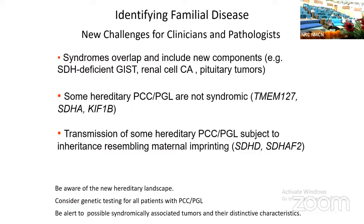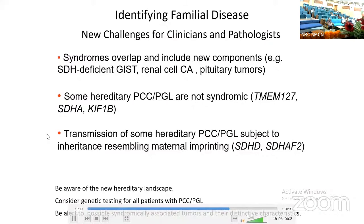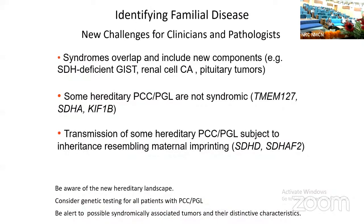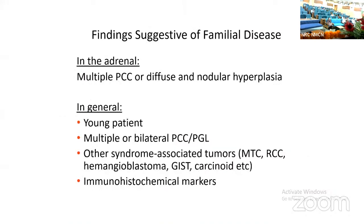The warnings to us here are to be aware of the new hereditary landscape, to consider genetic testing for all patients with pheochromocytoma paraganglioma, and to be alert to possible syndromically associated tumors and their distinctive characteristics. Findings suggestive of classical familial disease are multiple tumors and tumors combined with diffuse or diffuse and nodular hyperplasia. We no longer call nodular disease in the adrenal medulla nodular hyperplasia — all of these nodules have the molecular hallmarks of micro-pheochromocytomas. Familial disease in general also tends to occur in young patients, to be multiple or bilateral, to have other syndrome-associated tumors, and in some cases to have distinctive immunohistochemical markers.